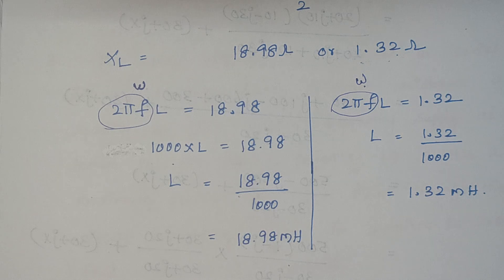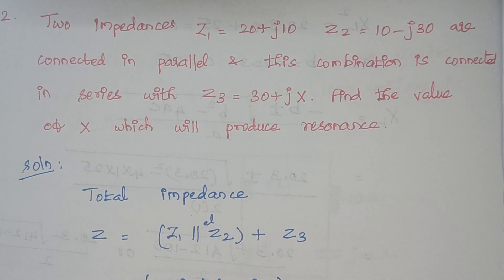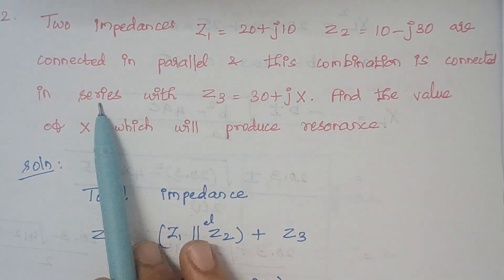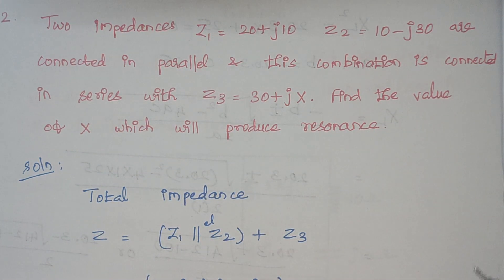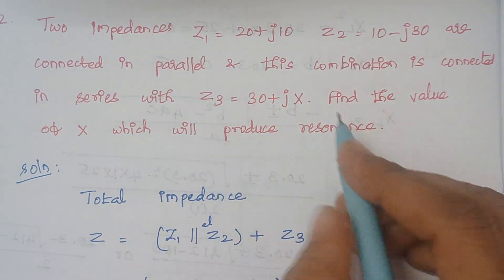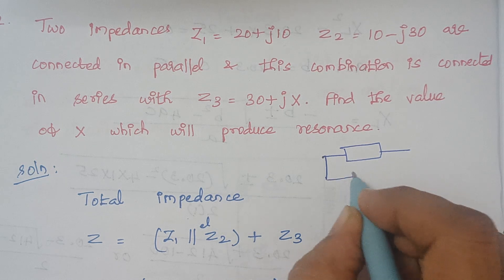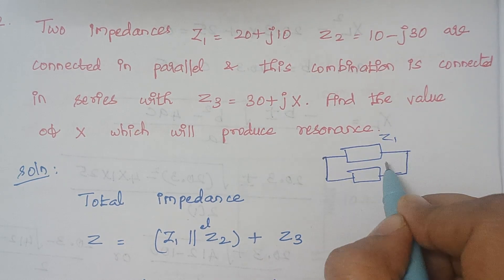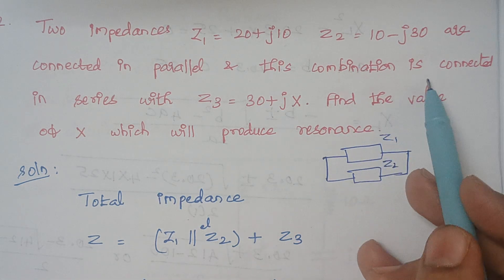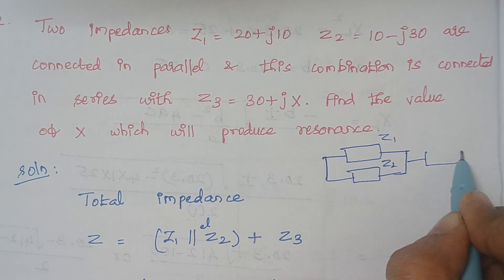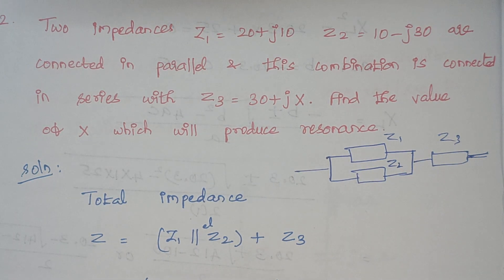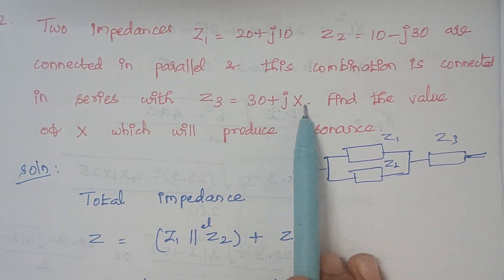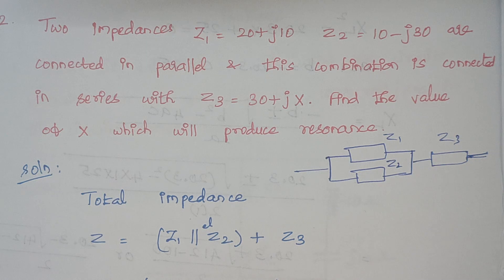Here comes the end of the first problem. The second problem: two impedances Z1 and Z2 are connected in parallel, and this combination is connected in series with Z3. Find the value of X which will produce resonance. Z1 and Z2 are in parallel, forming a sub-circuit, and this combination is connected in series with Z3. We have to find the value of X so that the circuit acts as a resonance circuit.